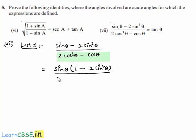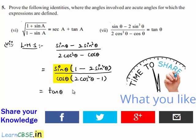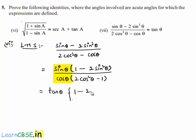In the denominator, let us take cos theta as common, then we get the denominator as cos theta into 2 cos squared theta minus 1. That is equal to, if we write sin theta by cos theta separately, then it is nothing but tan theta into 1 minus 2 into...